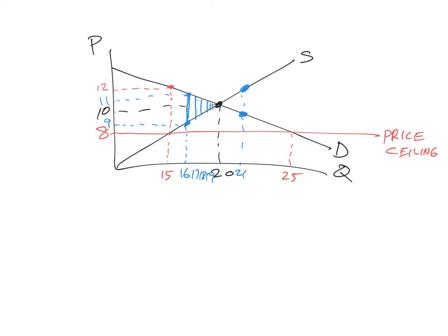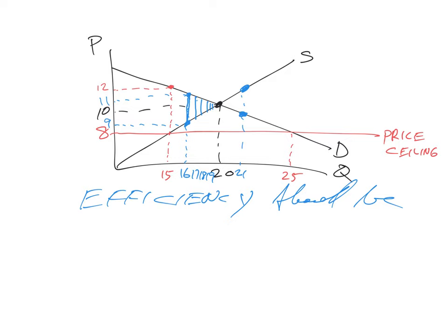This is precisely why efficiency should be our first goal. With efficiency we get 20 units — a higher standard of living. Here's the bottom line: you can't redistribute wealth that isn't created. With price controls it isn't created. Without price controls we have greater wealth and a higher standard of living. We've got to create the wealth first before we can alter its distribution. Price controls will keep wealth from being created.